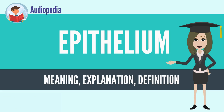An example is the epidermis, the outermost layer of the skin. There are three principal shapes of epithelial cell: squamous, columnar, and cuboidal.